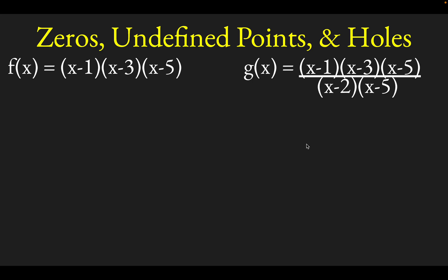All right, my friends, we're going to look at zeros, undefined points, and holes in rational functions. So if you look at this function f of x on the left-hand side, it's written as a product of three factors: x minus 1, x minus 3, x minus 5.